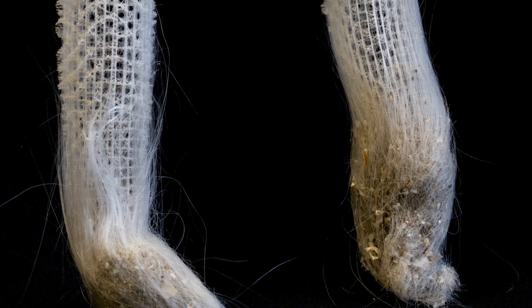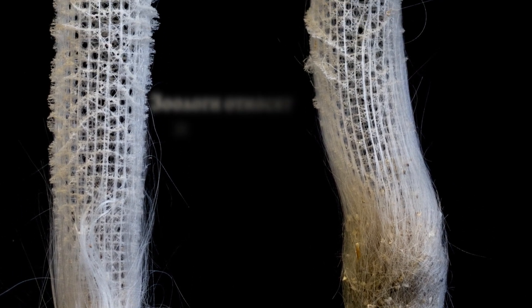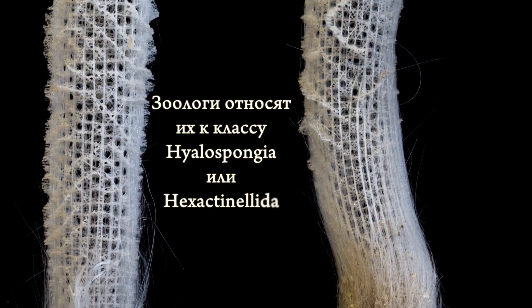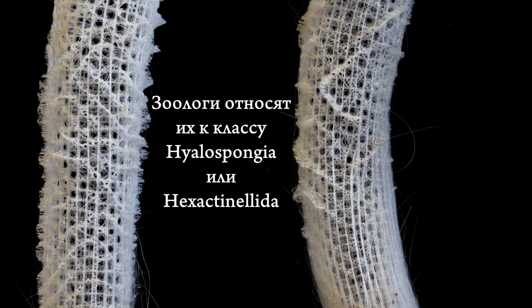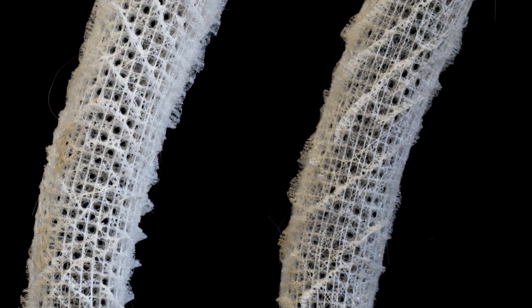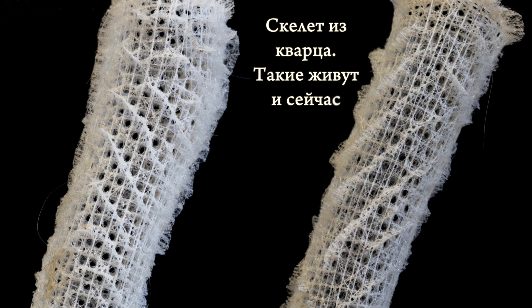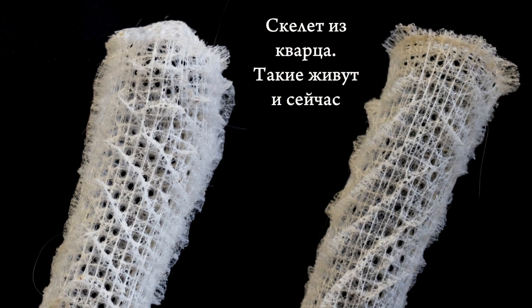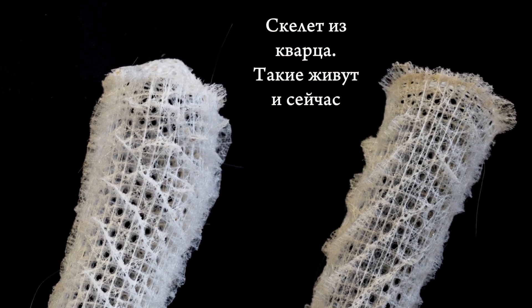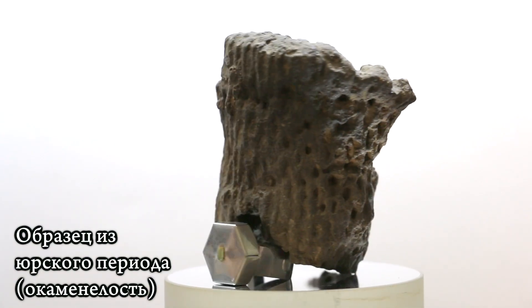Трудно представить нашу жизнь без кремния. А вот кое-кто на нашей планете не смог бы жить без кремния в буквальном смысле этого слова. Некоторые животные, такие как стеклянные губки, обладают кремниевым скелетом. Такие губки жили миллионы лет назад и живут в морях и океанах и сейчас.